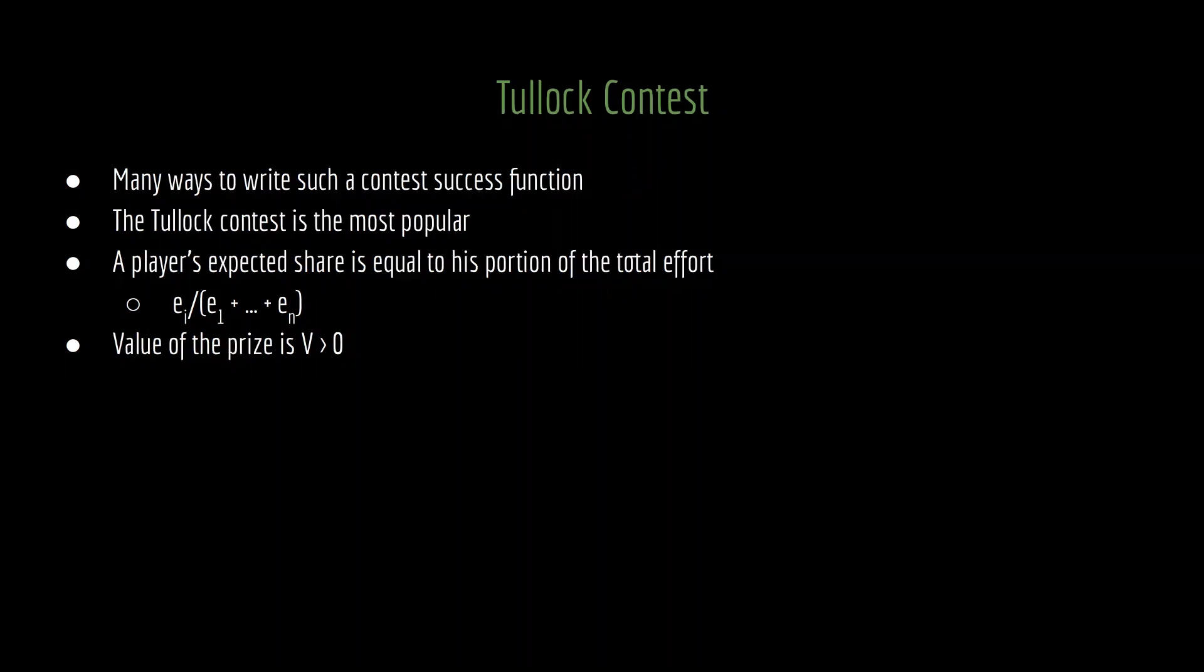Note that this is literally how a raffle works. If you buy one ticket, and 99 other people also each buy one ticket, then your probability of winning is 1 divided by 99 plus 1, or 1 in 100. And if you were to buy a second ticket, holding fixed everyone else, you would win 2 out of 101 times, and so forth. And then lastly here, the value of the prize is going to be common across everyone, and we're going to call that value v greater than 0.